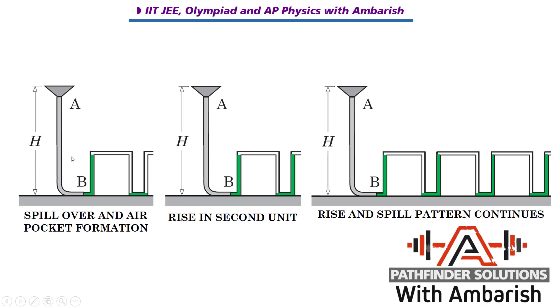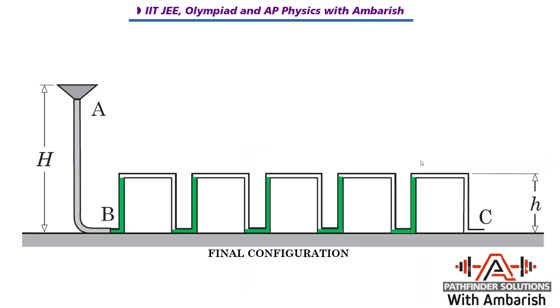Now if you continue this pattern, what is the final configuration that you get? You can see this is the final configuration with 5 units. This is filled to the top, this is filled to the top, this is filled to the top. And from here whatever is coming further is going to spill over here and get out from point C.